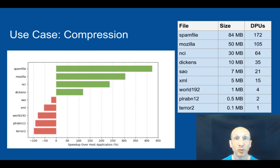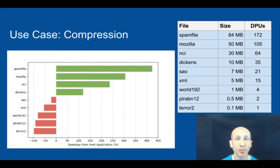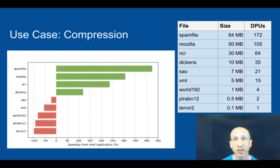We also experimented with algorithms to find the cutoff point where throughput gains can be expected. Using the Snappy decompression algorithm, we can get up to 4.5 times improvement over the host CPU by using a large number of DPUs and large file sizes. Large file sizes are important to achieve the high level of parallelism needed to outperform the CPU. As file size decreases, parallelism decreases, the benefit gets smaller, and in some cases even becomes a loss.